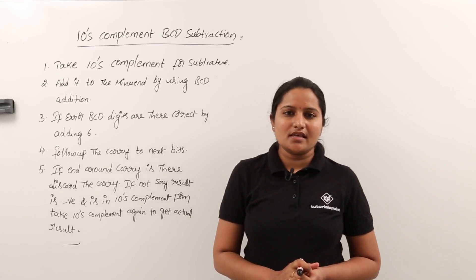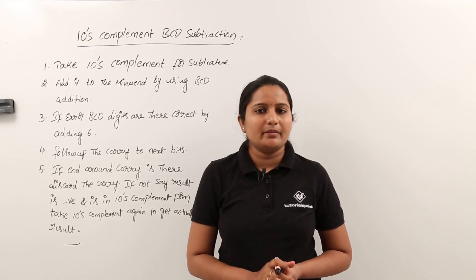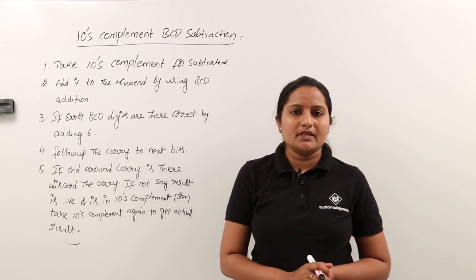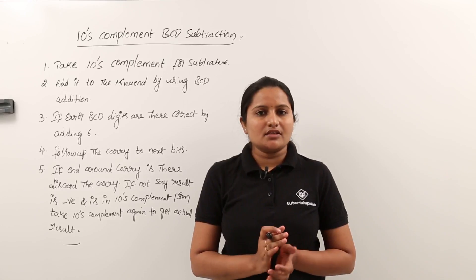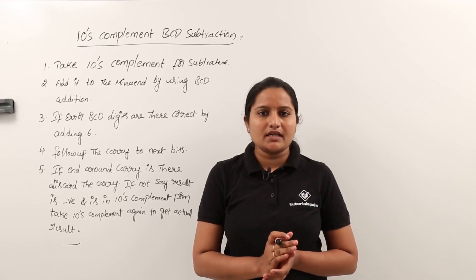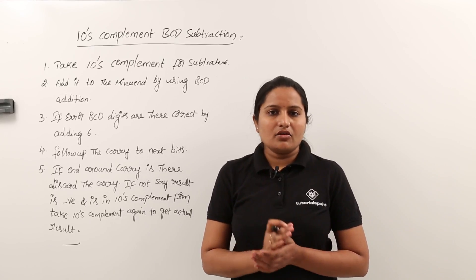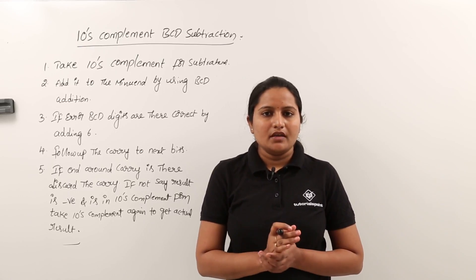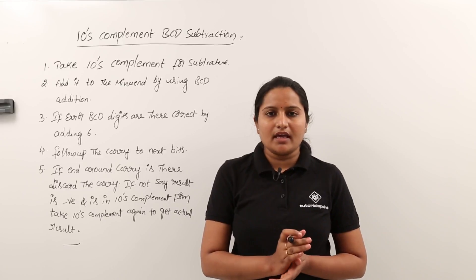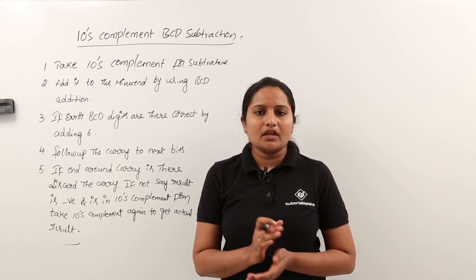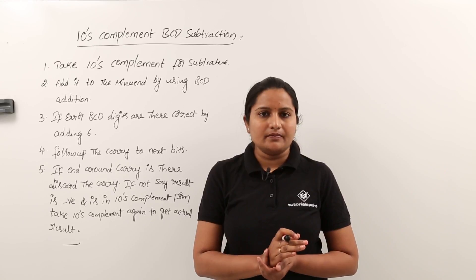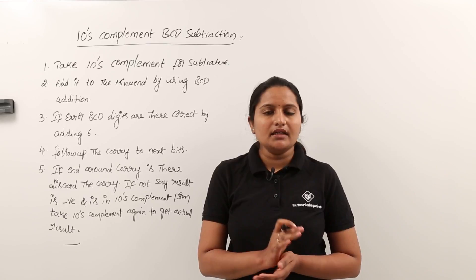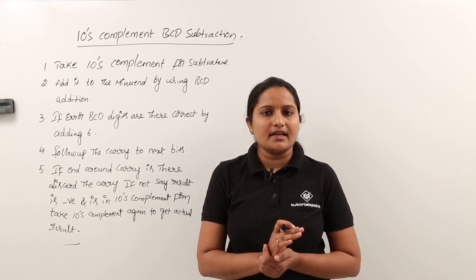In this class we are going to discuss about ten's complement BCD subtraction. This is very similar to nine's complement BCD subtraction. The only difference is that in ten's complement subtraction we eliminate the end around carry at the end. If you are not getting any end around carry then you treat that result as negative.